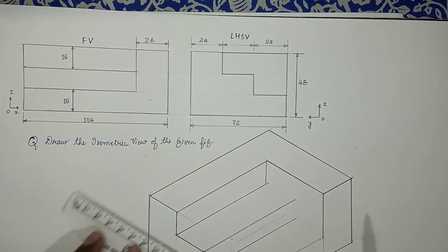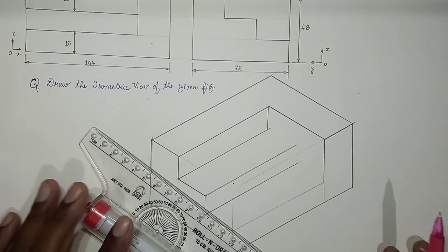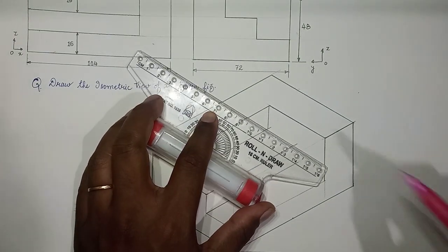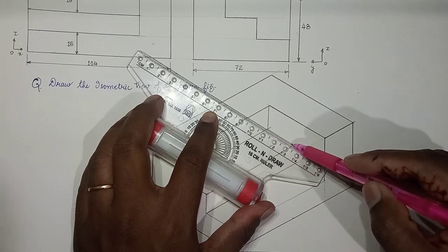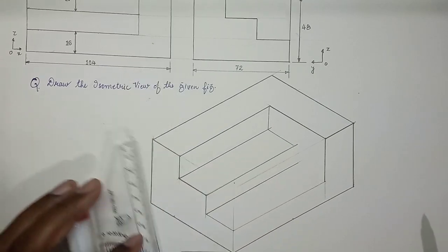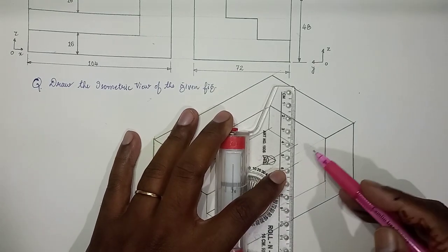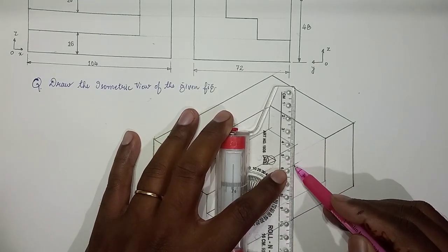This is 24. You can extend parallel lines. And again 16 along y-axis. You mark it over here like this.